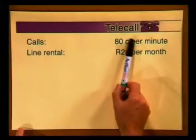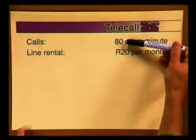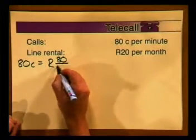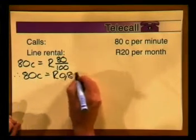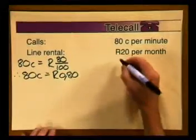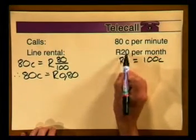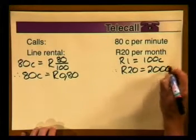We cannot add numbers until they are expressed in the same units. The cost of calls is in cents while the line rental is in rands. To convert cents into rands: 80 cents equals 80 divided by 100 rands, which is 0,80 rands. We could also convert rand values into cents: 1 rand equals 100 cents, so 20 rand equals 20 times 100 cents, which is 2,000 cents.